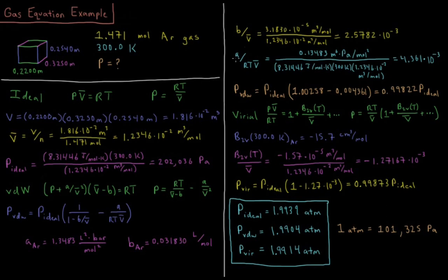So now I substitute those back into this expression. The Van der Waals pressure equals the ideal pressure times 1 over 1 minus B over V-bar, which is 1.00258, minus A over RT V-bar, 0.004361. Notice how each of these are very tiny perturbations away from the ideal pressure. Them taking up space increases the pressure a little bit, and them being attracted to one another decreases it a little bit.